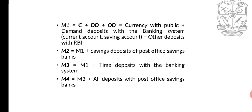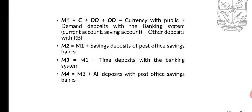So we have M1, M2, M3, and M4 as the RBI's measures of money supply in India. M1 is called narrow money, while M3 is called broad money. M3 is the broad money measure and M1 is the narrow money measure.